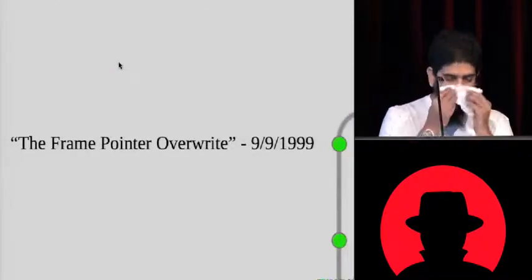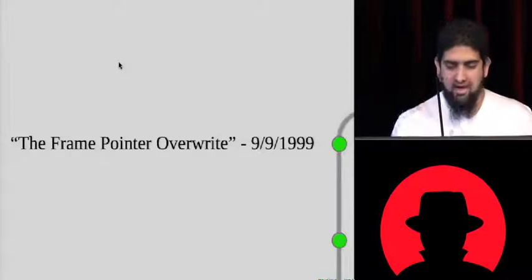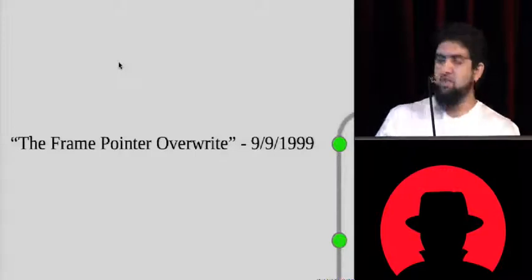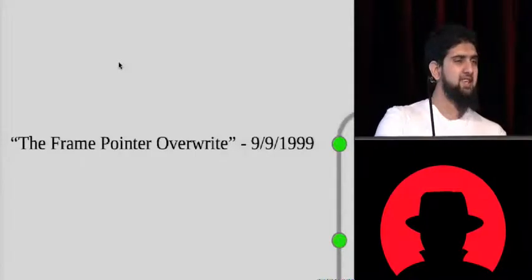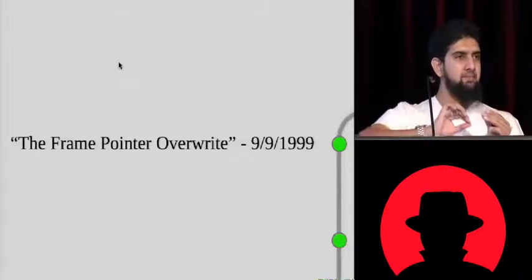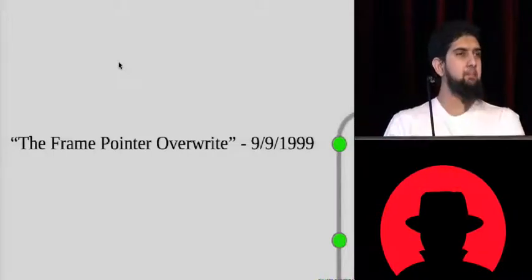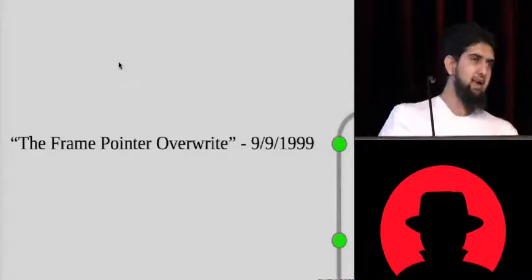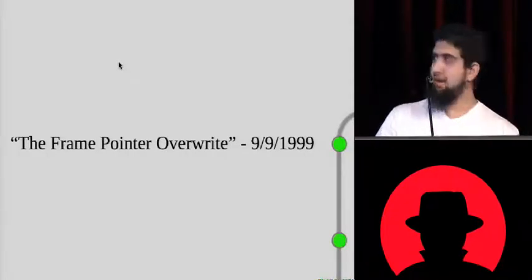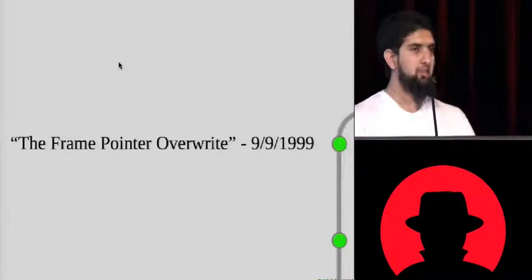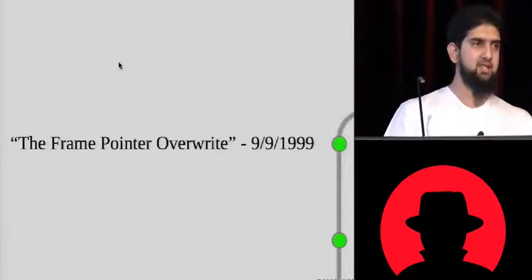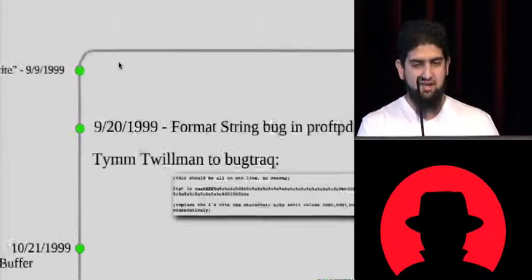The frame pointer overwrite was pretty cool. Klog published it in Frack. I won't give it a lot of attention, but essentially what Klog found was, under certain circumstances, if you could just overwrite one byte of the saved frame pointer, when execution continued, you could make bad stuff happen. The reason I'm skipping it here is you'll come up against it now in 2010 when we discuss attacks against ASLR.